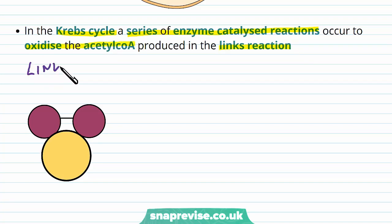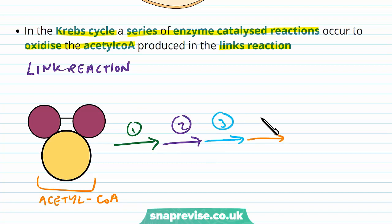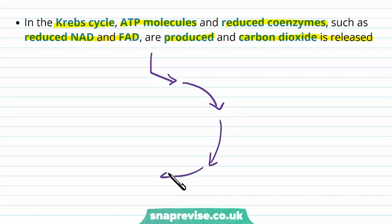At the end of the link reaction, we produced a molecule where we had an acetyl combined with a coenzyme A, forming acetyl-CoA. This then feeds into the Krebs cycle, which is basically a series of different reactions happening one after another in a specific order, and they overall oxidize the acetyl-CoA to produce new products. During the progress of the Krebs cycle, ATP molecules and reduced coenzymes like NAD and FAD are produced, and carbon dioxide is made too as a side product and gets released.